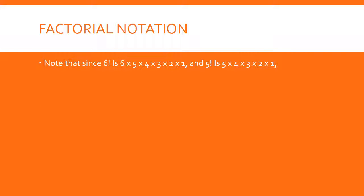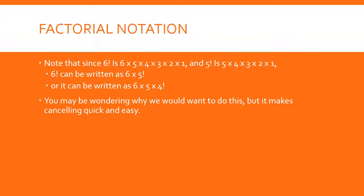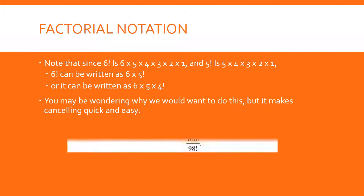Notice that six factorial is six times five times four times three times two times one, and five factorial is five times four times three times two times one. Six factorial could be written as six times five factorial, or as six times five times four factorial — you can split things up this way. Sometimes when we want to divide, it can make the dividing go a lot faster.